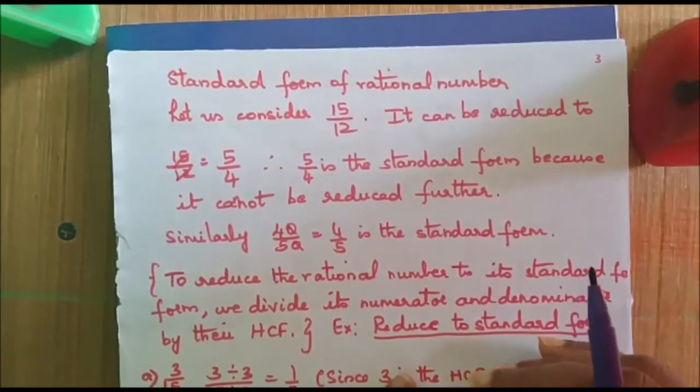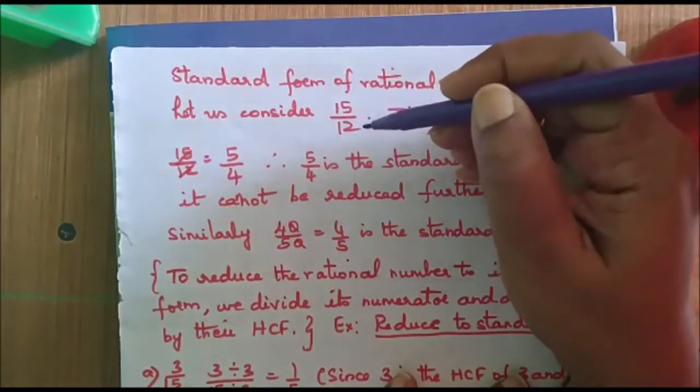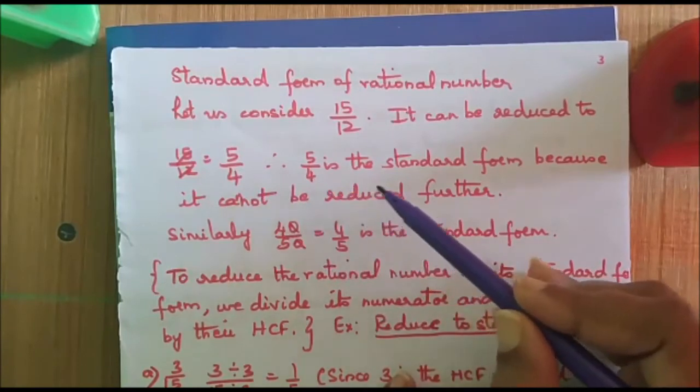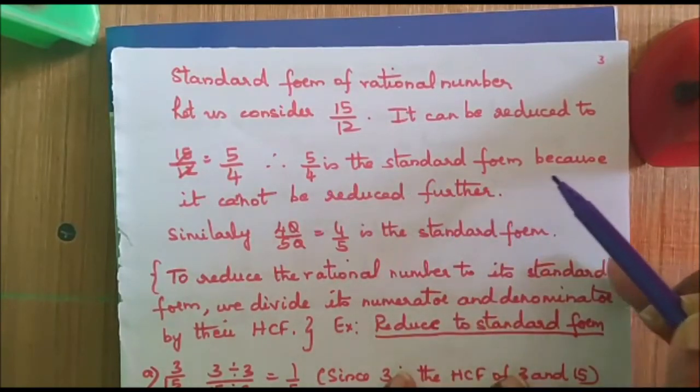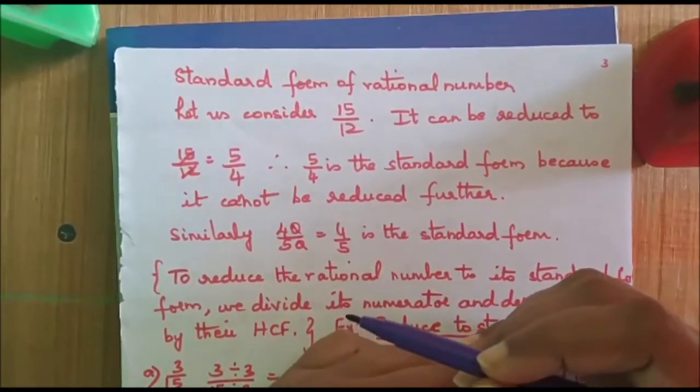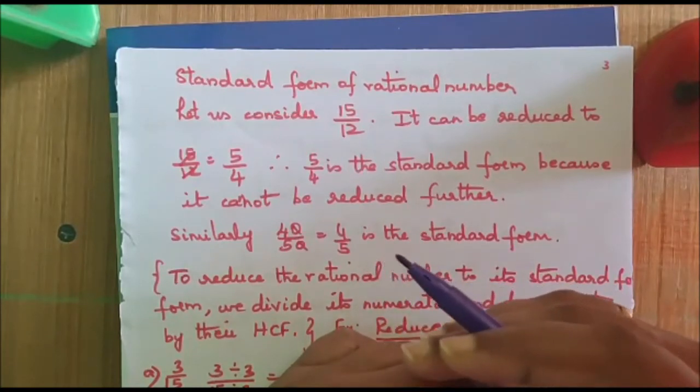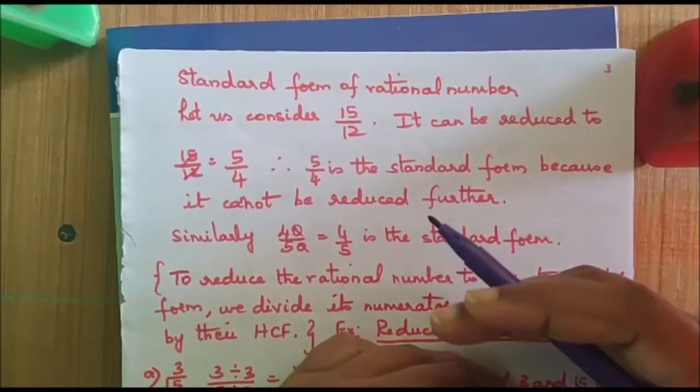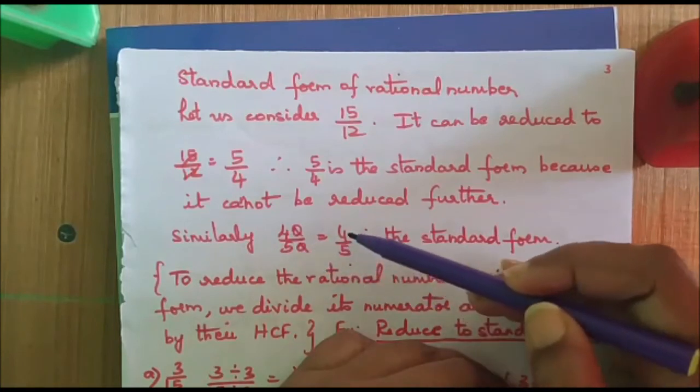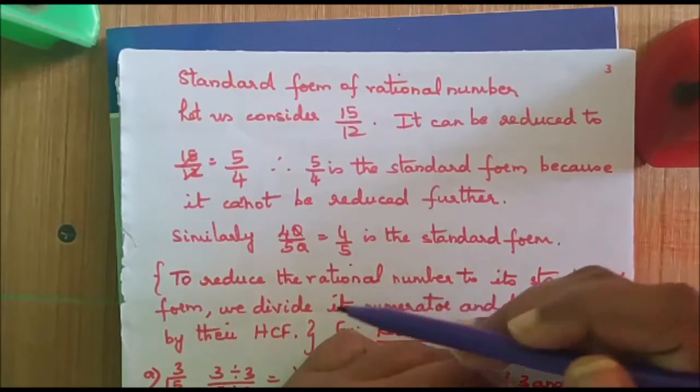Now, we will go to the next part, that is standard form of rational numbers. Let us consider a rational number 15 by 12. It can be reduced to 5 by 4. So, 5 by 4 is the standard form because it cannot be reduced further. When you are given a rational number and when you cannot reduce it further, that is called as the standard form. Similarly, let us take 40 by 50. You can write it as 4 by 5. So, 4 by 5 is the standard form.